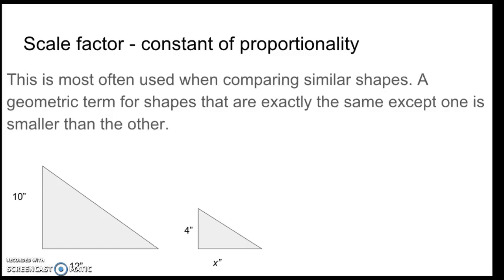Scale factor or the constant of proportionality. This is most often used when you compare shapes that are similar. And that's just a geometric term for shapes that are exactly the same, except one is smaller than the other. And it's smaller by a ratio. So, take these two triangles here. This on the left and this on the right. Triangle on the left is 10 inches up and down and 12 inches across.